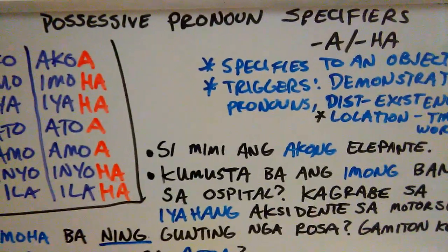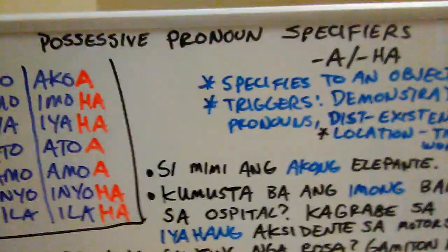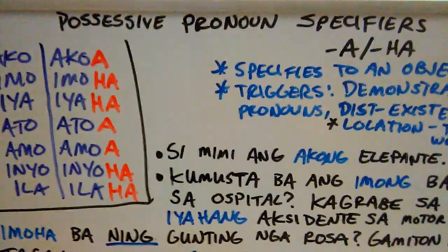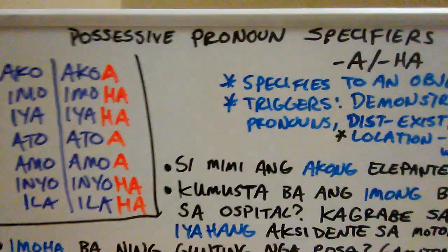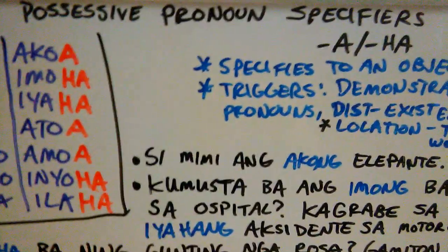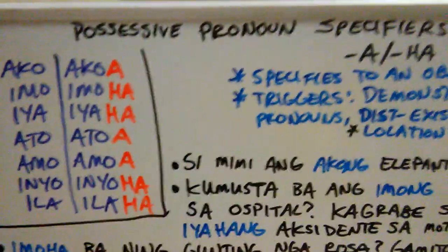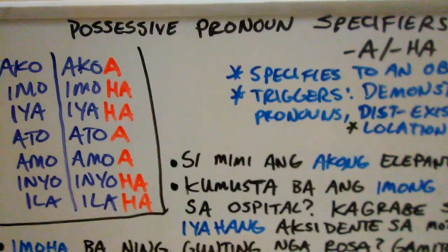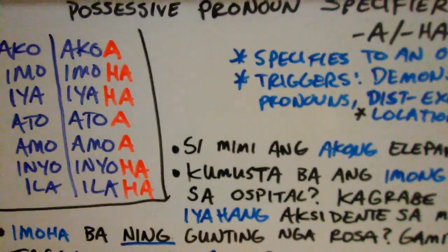Let's talk about possessive pronoun specifiers. This could be a lengthy video, so brace yourself. You already know how to make the possessive pronouns and their forms, as well as how to make specifiers by using whatever affixes we have. But what if we put them together? If we mix those two together, we get something completely new.